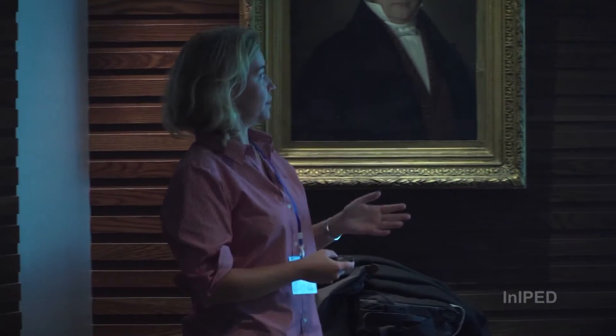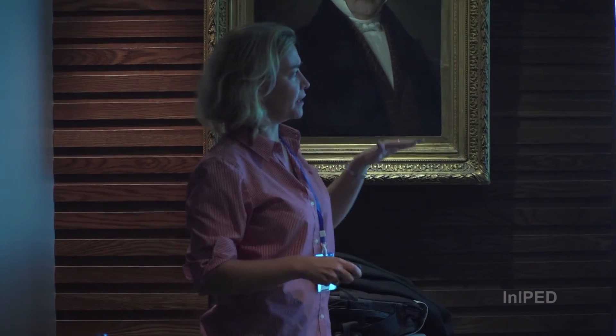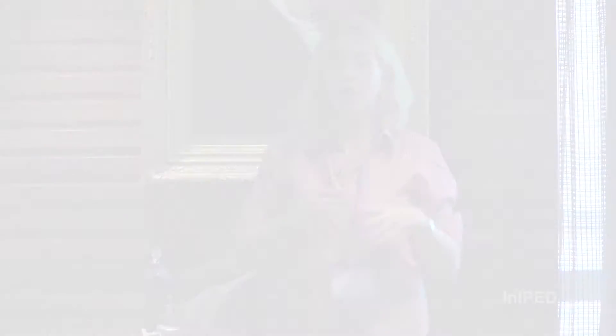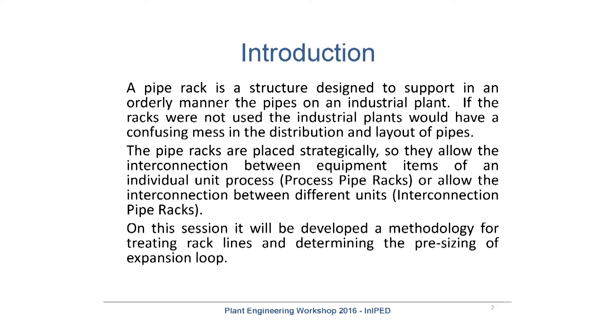Because I don't know if everyone knows what a pipe rack is, I will give you a short introduction. The pipe rack is the main structure of a unit. It's the structure that allows me to carry the lines from one equipment to another equipment in an orderly way. It means I don't want to have pipe going through all the space — it helps me to carry the lines from one point to another point of the unit.